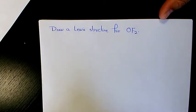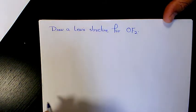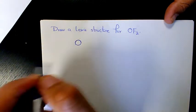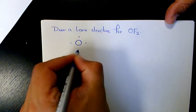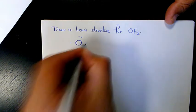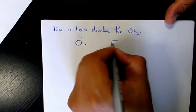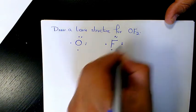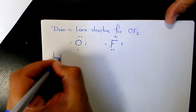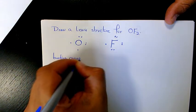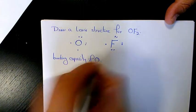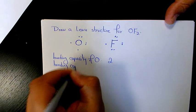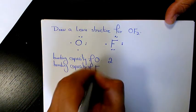So the first thing I need to do is find out the bonding capacity of each element in this compound. We have oxygen and we have fluorine. The valence electrons for oxygen: six (1, 2, 3, 4, 5, 6). And for fluorine we have seven (1, 2, 3, 4, 5, 6, 7). So bonding capacity of oxygen is two, bonding capacity of fluorine is one.